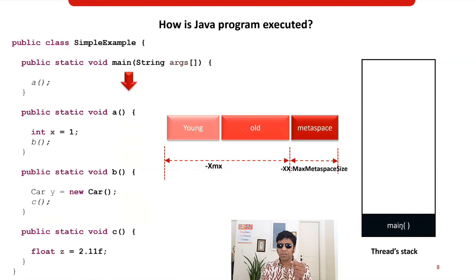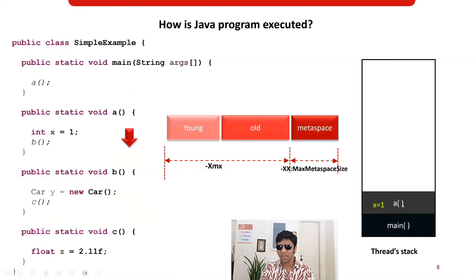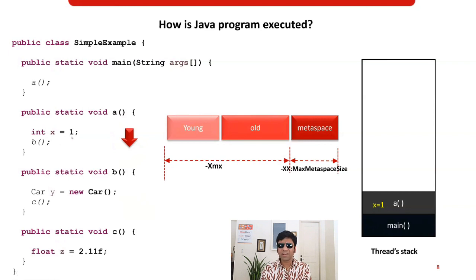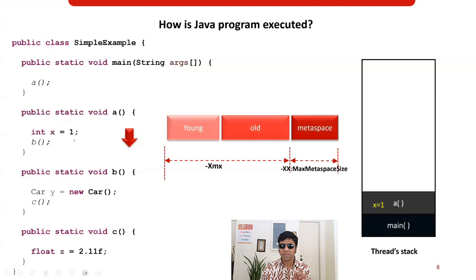The main method is added to the stack frame. The thread sees that main invokes method A and goes to execute it — method A is added to the stack. Now, where is the local variable x = 1 stored? Since x is a local variable, it is stored in the thread's stack frame itself. And since the value 1 is a primitive data type, it is also stored directly in the thread stack.